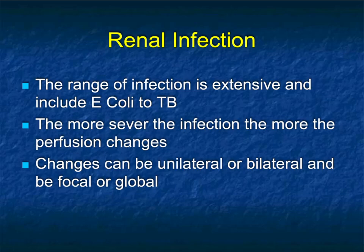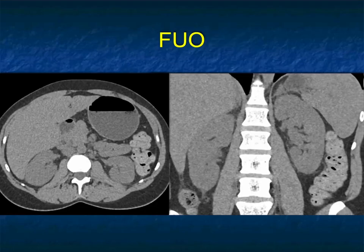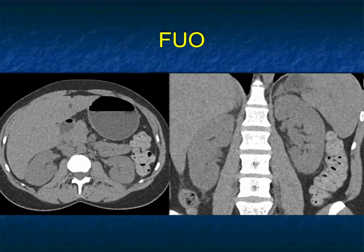The more severe the infection, the more the perfusion changes. And changes can be unilateral or bilateral. They can be focal or diffuse. In terms of renal infection, if you had to pick one phase for detecting infection, typically you would end up saying the later phase may be excretory because all the work on striated nephrograms for infection were done by Mort Bosniak on IVPs, which were always late phase imaging. On non-contrast scans, you can see the presence of stones, but you could overlook the presence of pathology.